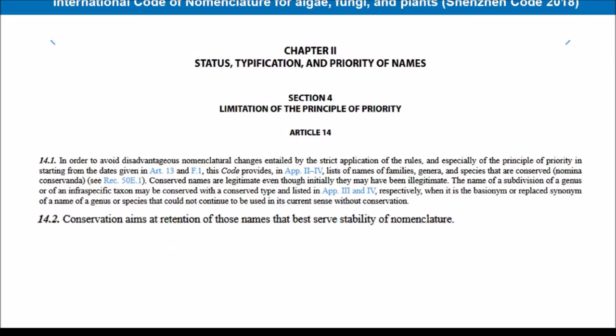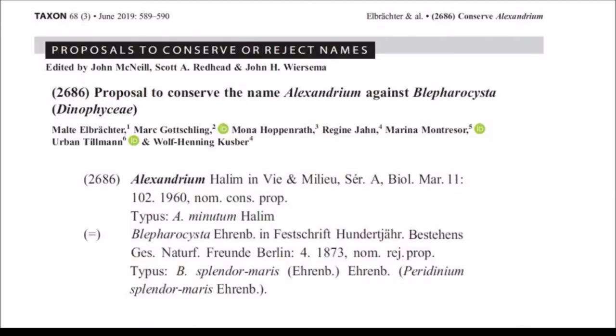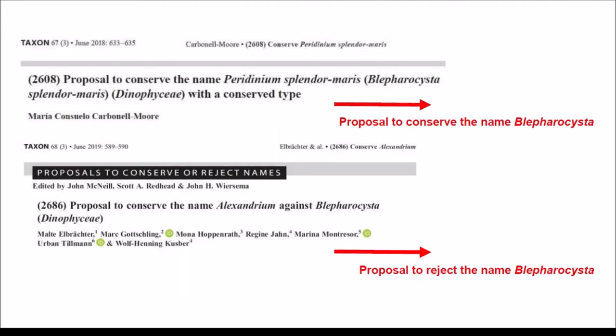Conservation is meant to provide stability in nomenclature, but not when it is based on a mistaken interpretation. Carbonell Moore submitted a proposal to conserve Blepharocysta splendor maris in the sense of Stein for the oceanic species. He argues that Ehrenberg had no type material and that the species Ehrenberg described was Bioluminodinus poliedra. This author also submitted a proposal to conserve the name Alexandrium over Blepharocysta. So we have two proposals: one to conserve the name Blepharocysta, and another to reject it.